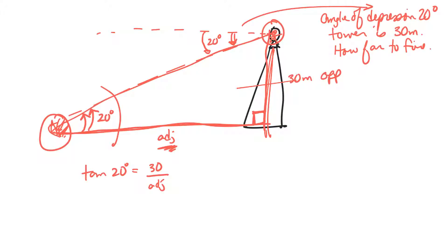To figure out the adjacent side, I'll multiply both sides by the adjacent side. These will cancel. So I have the adjacent side times by the tan of 20 is equal to 30. And then I'll divide both sides by the tan of 20 degrees.